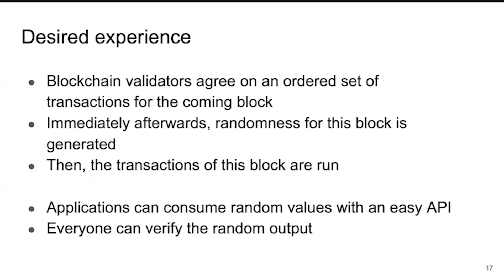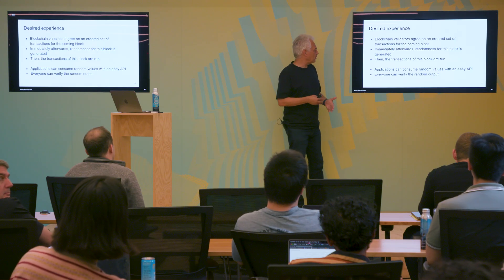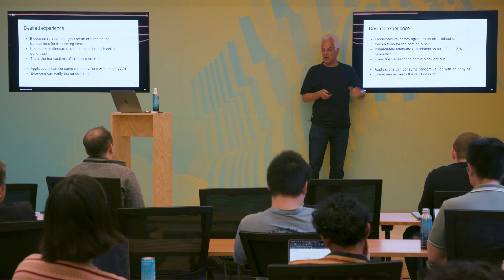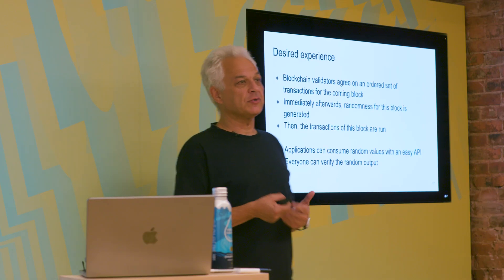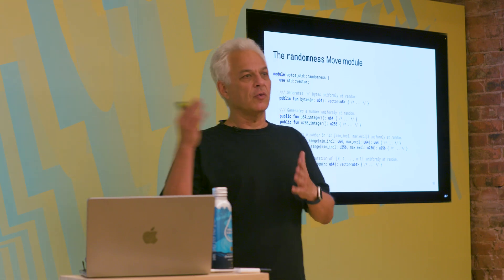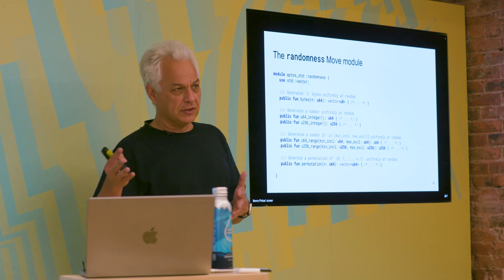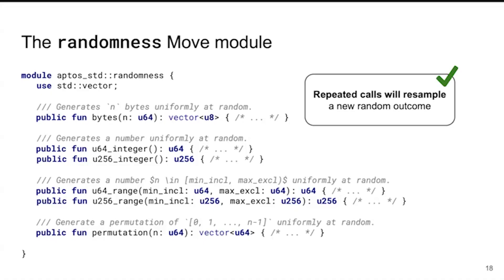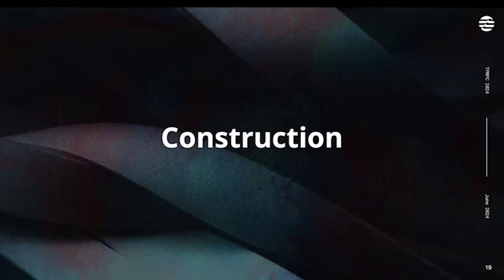The desired experience is that our blockchain validators agree on the set of transactions for a block, order them, then immediately get one randomness value from which we can generate random values for each transaction in that block, and then run those transactions. The API should be very easy - functions to get a certain number of bytes, values in a certain range, etc., just like any programming language. Programmers don't know what's happening at the back end; they just call 'random' and every call within the same smart contract gives a fresh value.